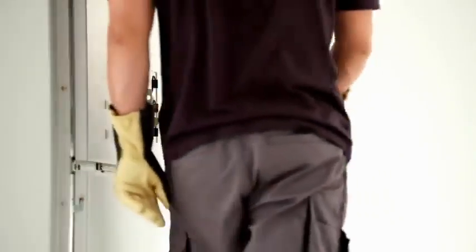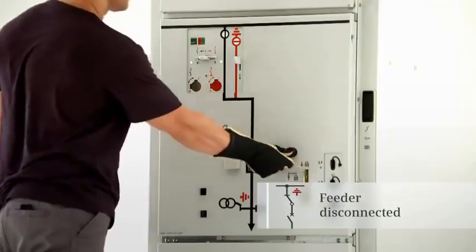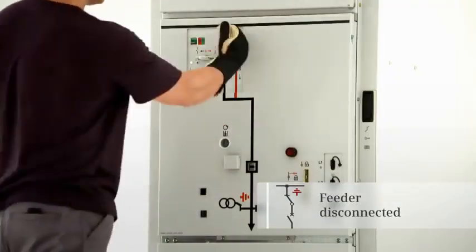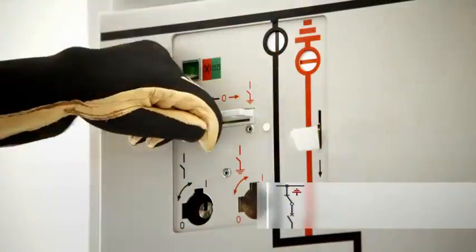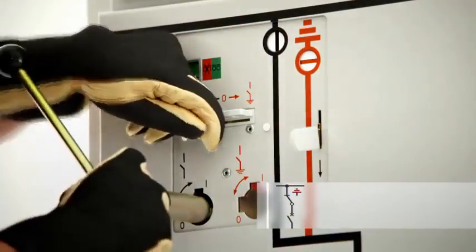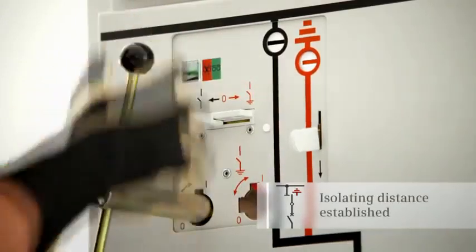To disconnect a feeder from the bus bar and to earth it subsequently, the circuit breaker is first switched to the open position. Only after the interrogation lever has been pushed down and the control gate has been pushed to the left can the three position disconnector be switched to the open position by turning the operating lever counterclockwise.